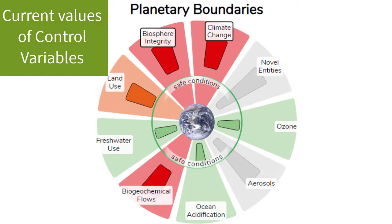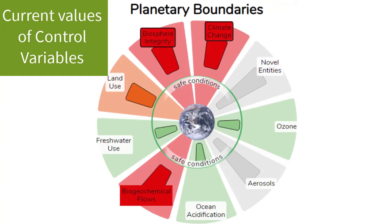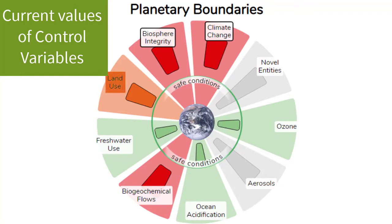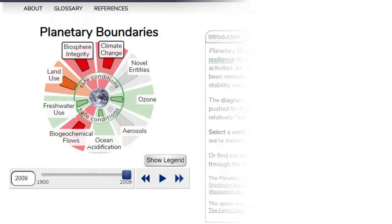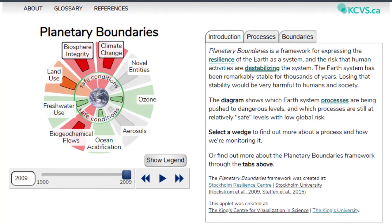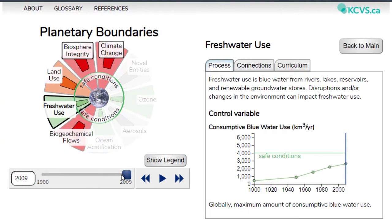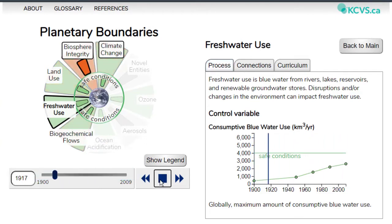Right now, at least one of the control variables in each of the climate change, biosphere integrity, and biogeochemical flows Earth systems are in the red zone of definite high risk, and the control variable for the land use Earth system is in the orange zone, indicating that this system is probably at high risk. The graphic indicates the current values of the control variables, and the graphs on each information panel or the slider on the main screen can show you the value of the control variable since the year 1900.